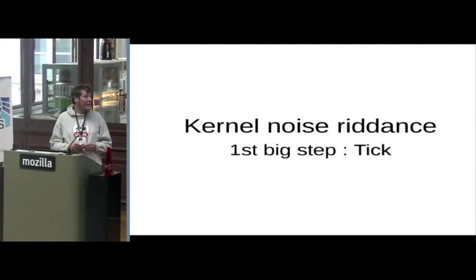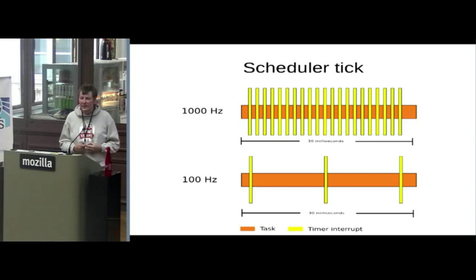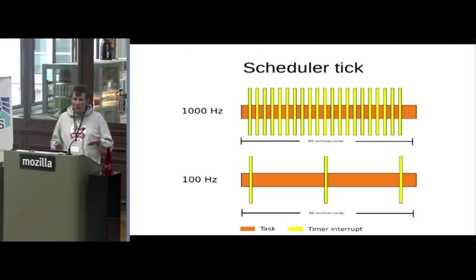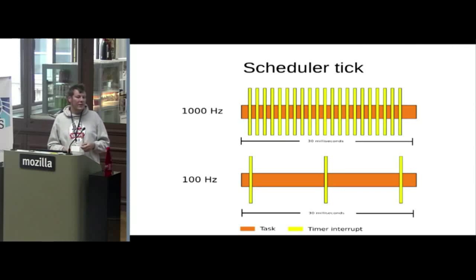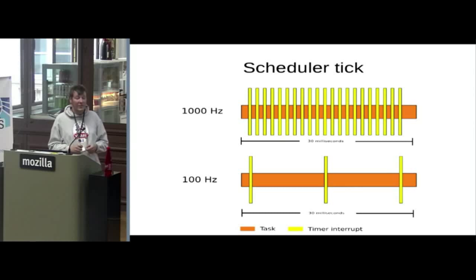The very first and biggest step is getting rid of the tick, because it has a lot of dependencies. The tick is a periodic event implemented as an interrupt, occurring at a user-defined rate. It usually depends on the architecture but typically ranges from 50 to 1000 Hz. As you can see in the picture, it makes a huge difference — 1000 interrupts per second versus only 100, or sometimes 50.